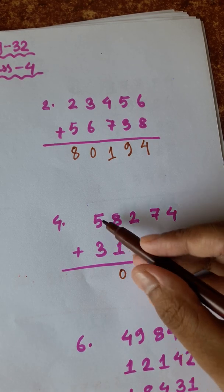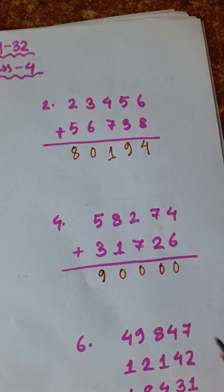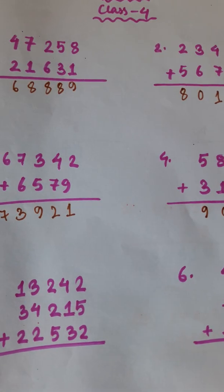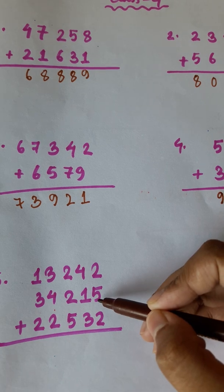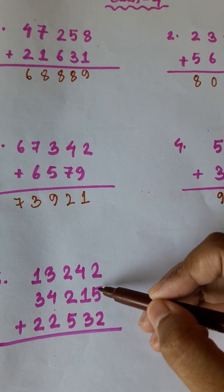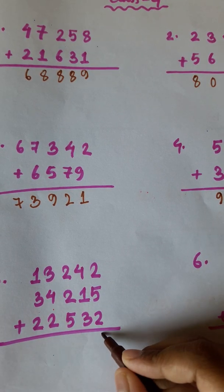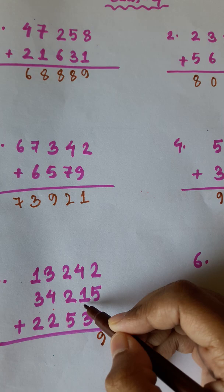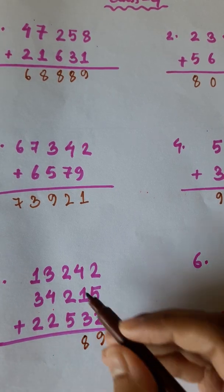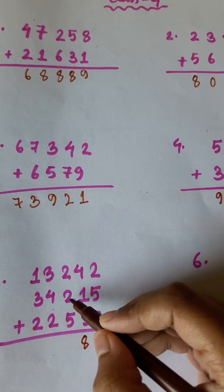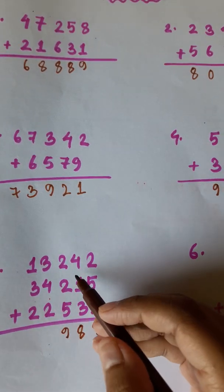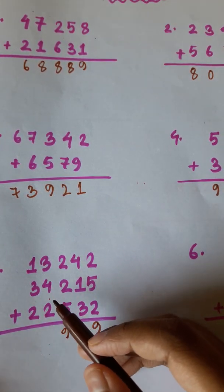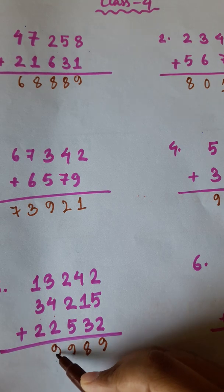8 plus 5 is 10, 11, 12, 13, 14, 15. Next: 2 plus 5, 7 plus 2 is 9. 4 plus 1, 5 plus 3 is 8. 2 plus 2, 4 plus 5 is 9. 3 plus 4, 7 plus 2 is 9.